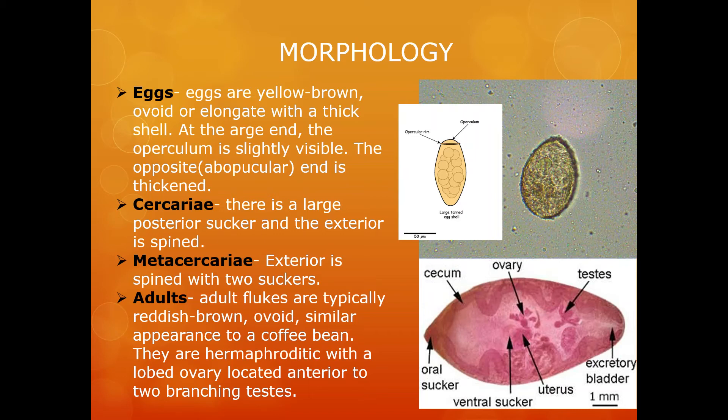Adult flukes have a reddish-brown colour, are ovoid in shape, and possess an appearance quite similar to a coffee bean. Near the excretory bladder at the anterior they have a pair of branching testes, and in the middle a lobed ovary. This means that these flukes are hermaphrodites, meaning they have both male and female sex organs.